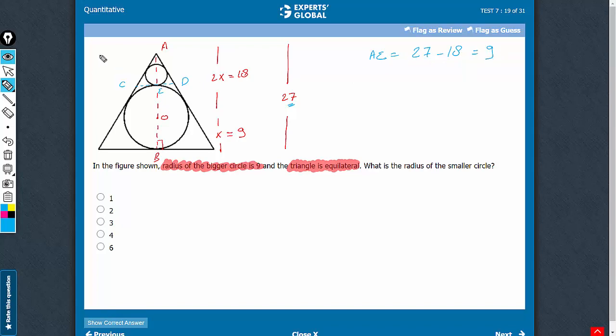So AE is equal to 9. We know that this entire length here is 9, and once again, by the same concept, this point here, the center of the smaller circle, is going to divide this entire length AE in the ratio 2 is to 1.